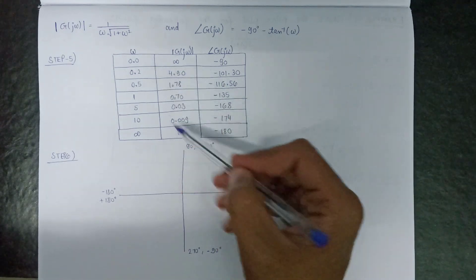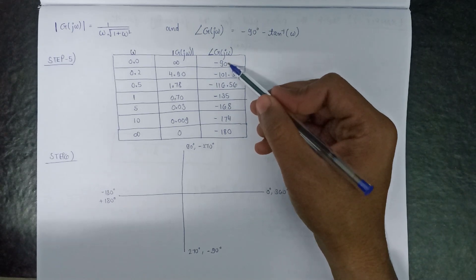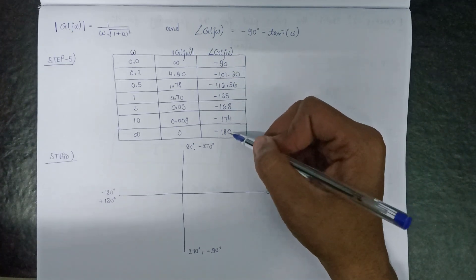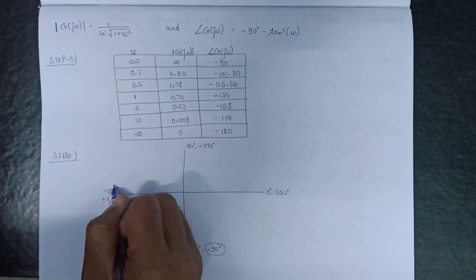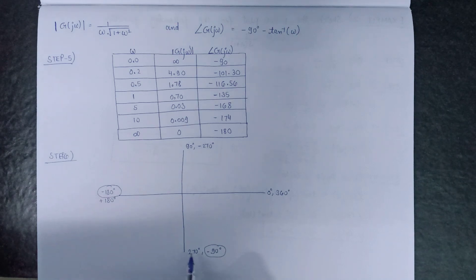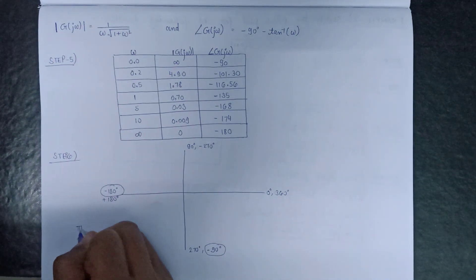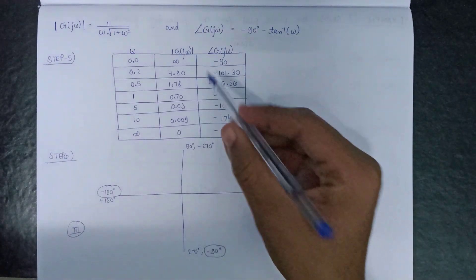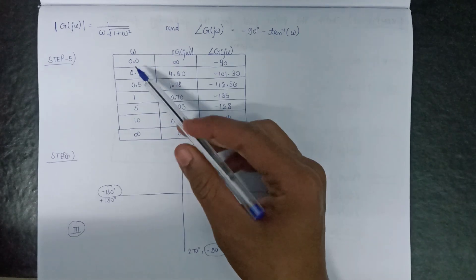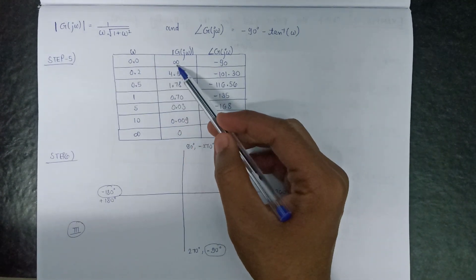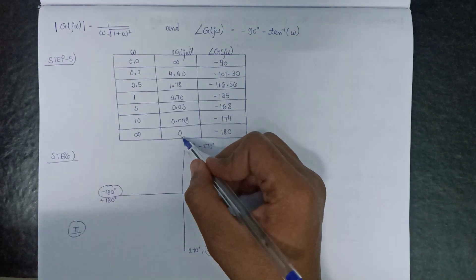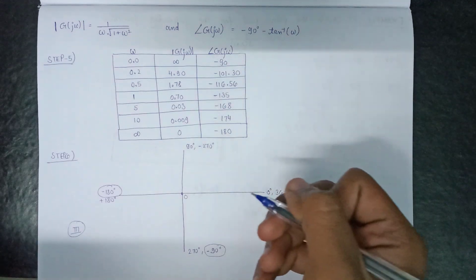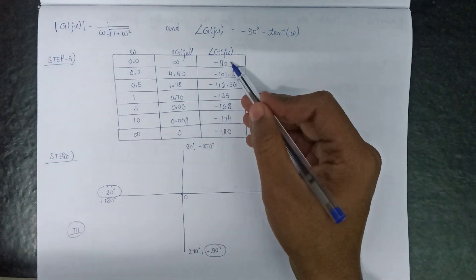From observation of the table, the polar plot starts from −90° and ends at −180°. The plot lies between −90° and −180°, which means it lies in the third quadrant. From the magnitude calculation, at ω = 0 the magnitude is infinite, and at ω = ∞ the magnitude becomes zero — this is the zero at the origin.